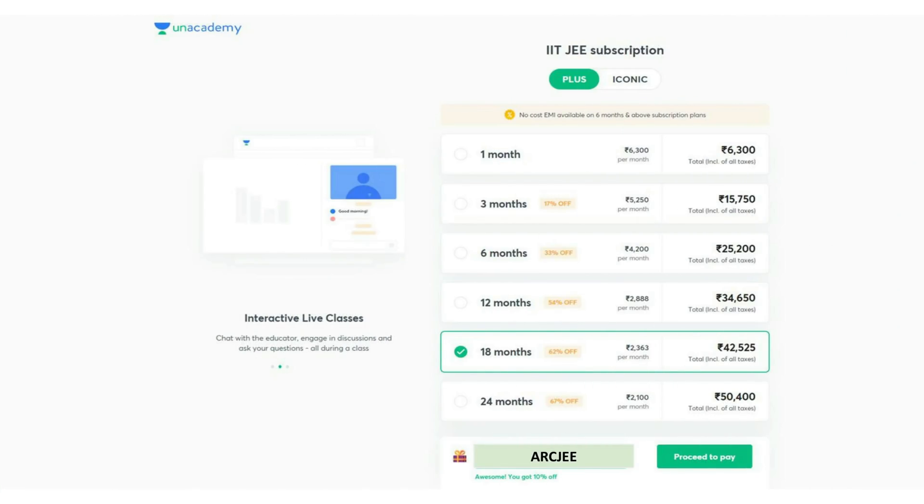Here is the plus subscription description that you can choose the best program for you. And here is the catch. Apply the promo code ARCJEE while you are proceeding to pay and you get an exciting discount of 10%. So now let's begin with the video.